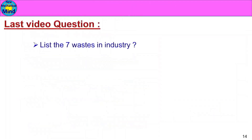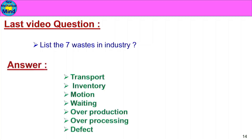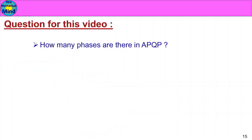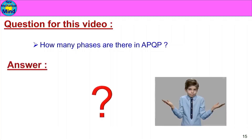Now a question for you: What are the seven wastes in industry? The answer is: Transport, Inventory, Motion, Waiting, Over Production, Over Processing, and Defect. Next question: How many phases are there in APQP? That is the question — answer in the comments. Thank you.